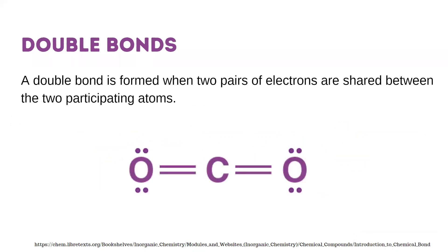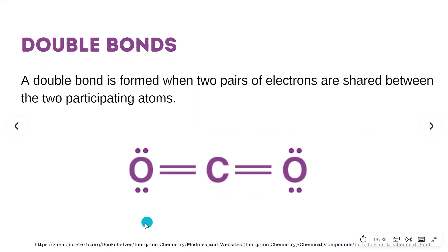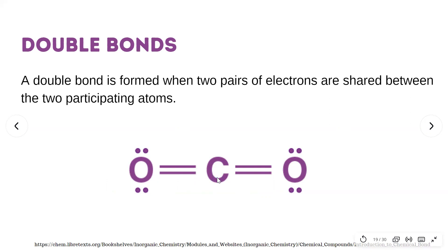Now let's go to the double bond. A double bond is formed when two pairs of electrons are shared between two participating atoms. It is represented by two dashes. Double covalent bonds are much stronger than a single bond, but they are less stable. For example, in the carbon dioxide molecule, carbon has four valence electrons and two oxygen atoms each have four valence electrons. To complete its octet, carbon shares two of its valence electrons with each oxygen atom, and each oxygen atom shares its two electrons with carbon, forming two double bonds in carbon dioxide.